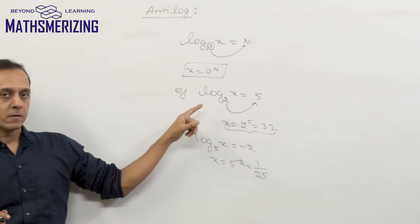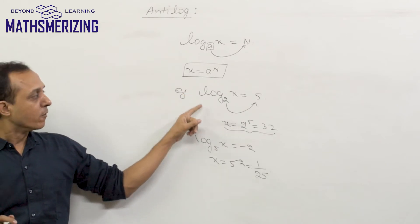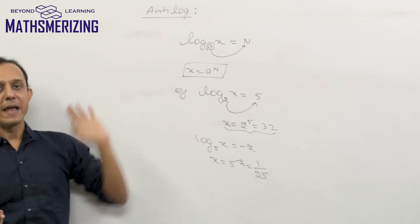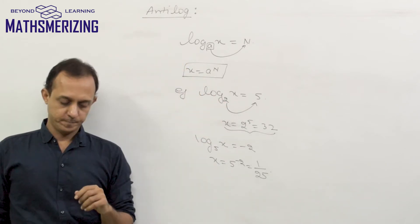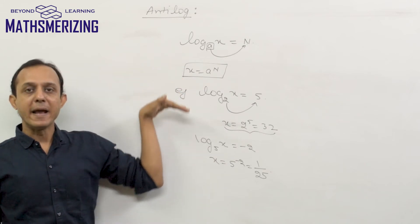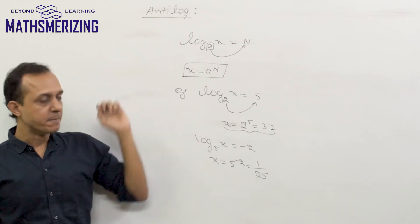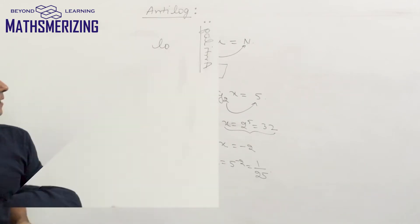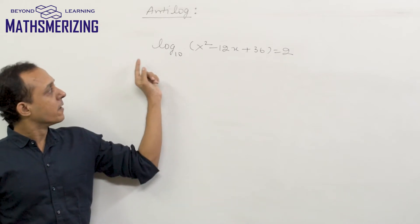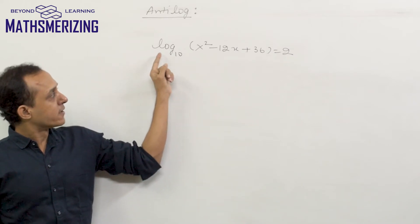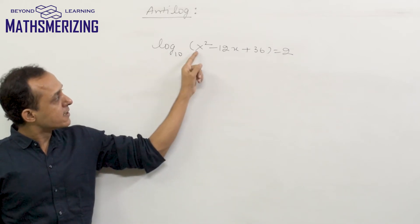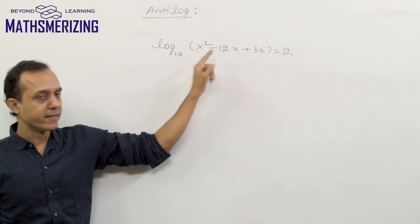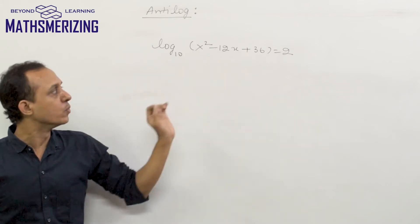So when we need to remove a log, we use antilog. There are many questions based on antilog. For example: solve for x where log(x² − 12x + 36) to the base 10 equals 2.